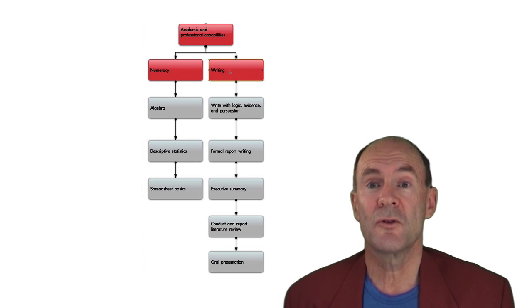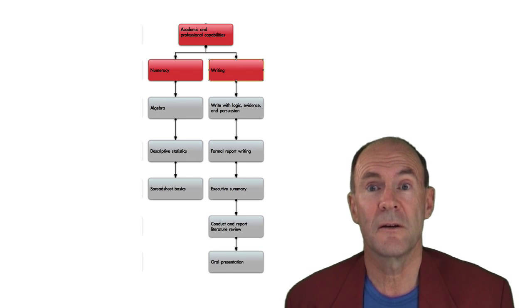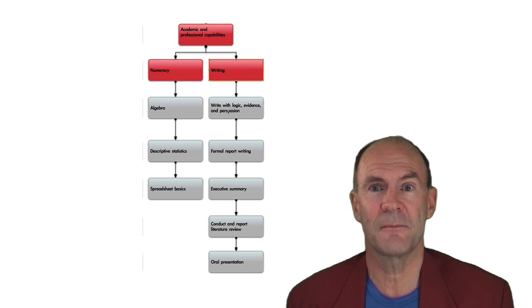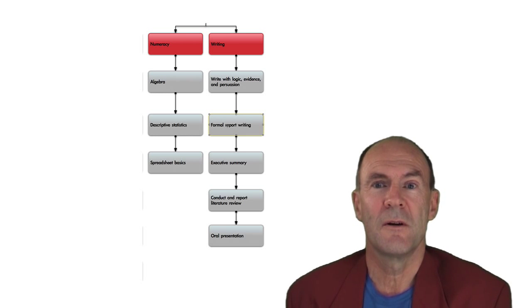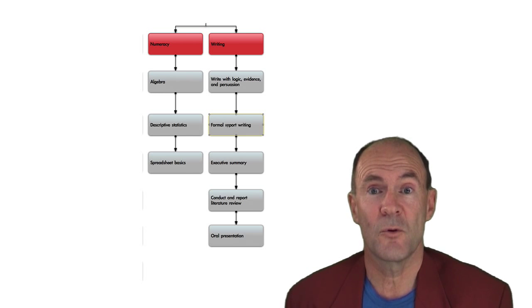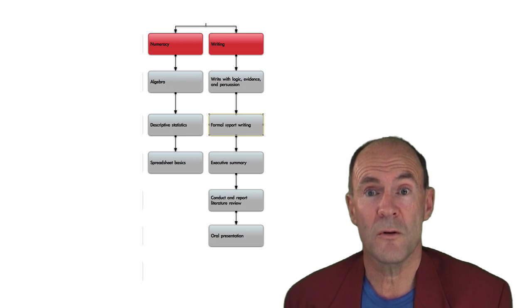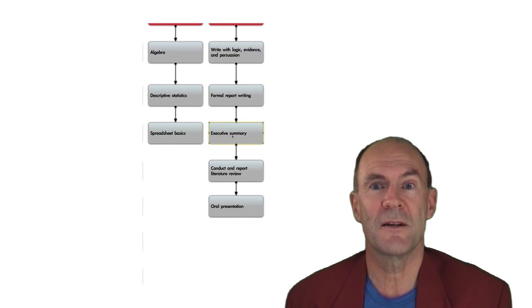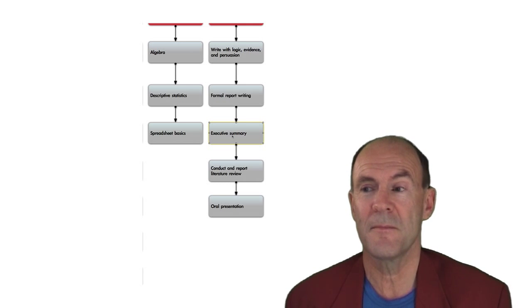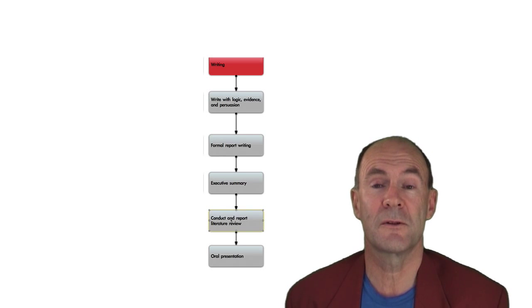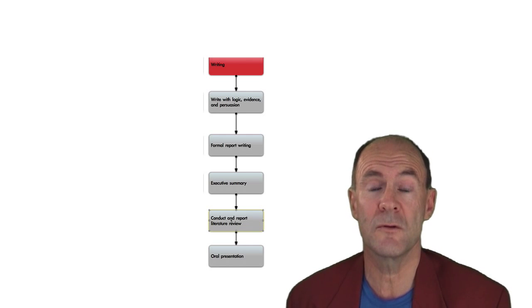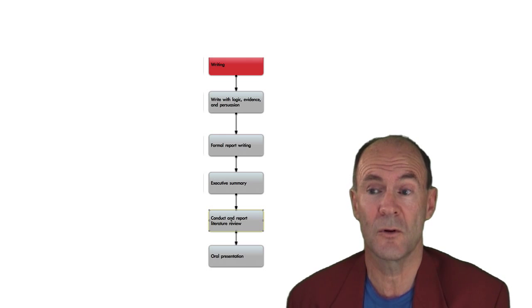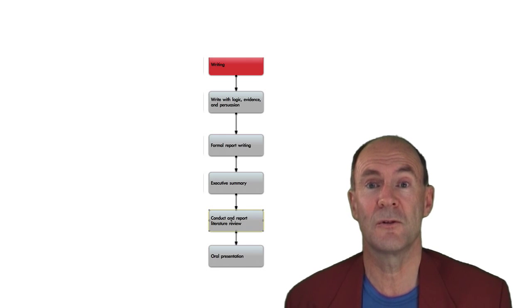In terms of writing skills, you should know how to write with logic, with evidence and with persuasion. You need to be able to write succinctly and clearly. You'll be expected to prepare the results of your investigations in formal reports. You'll need to know how to summarize the key essence of those reports in the form of an executive summary. You'll need to be able to conduct and report the results of literature reviews relevant to a particular investigation you're conducting. And finally, you'll need to be able to learn how to present your materials in an oral format.